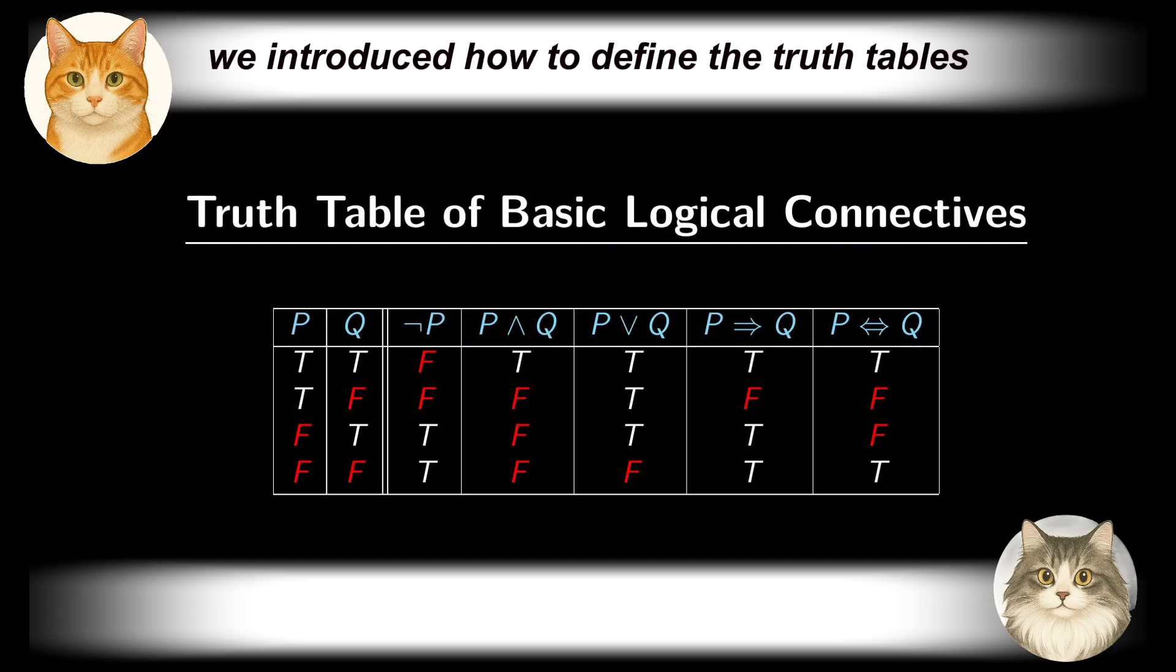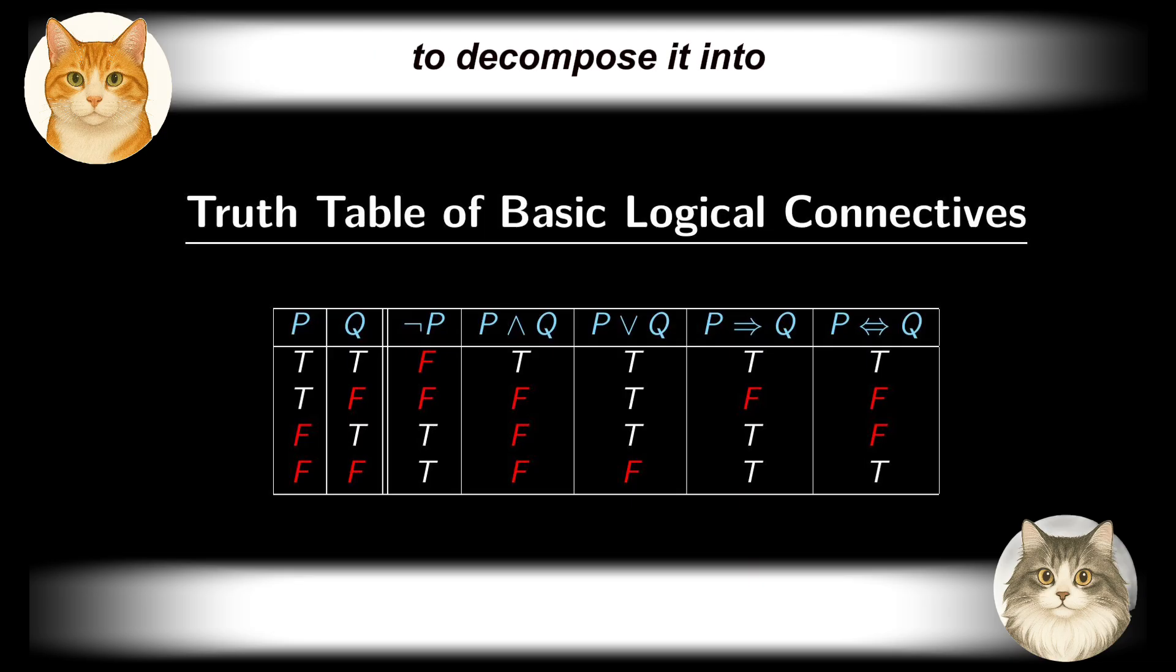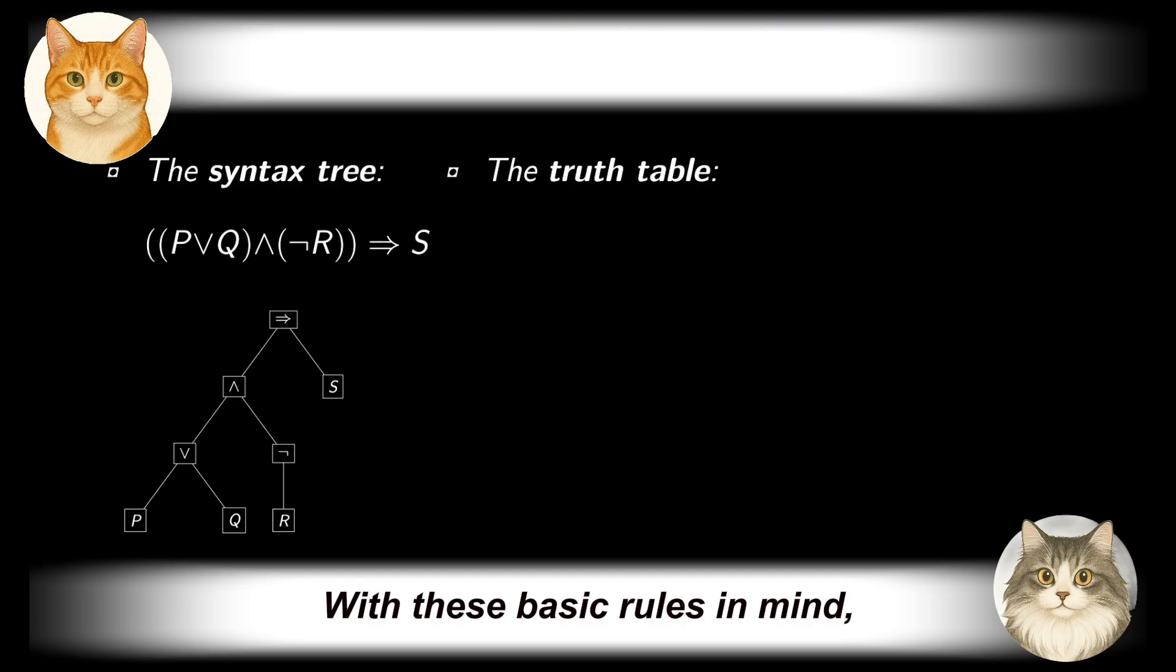Previously, we introduced how to define the truth tables for propositions involving a single connective. Now, when dealing with a compound proposition containing multiple connectives, we can use its syntax tree to decompose it into several simpler propositions, each involving only a single connective. After that, we study the truth values of those simpler propositions at each hierarchical level by recursively applying the basic truth tables. With these basic rules in mind, let us now construct the truth table for the example mentioned at the beginning of this section.